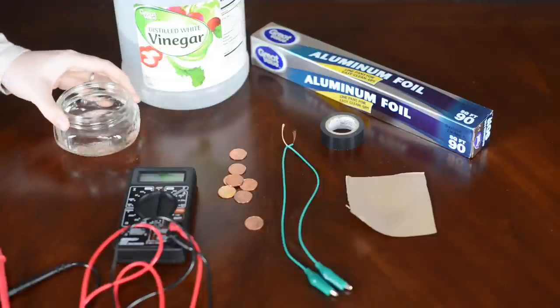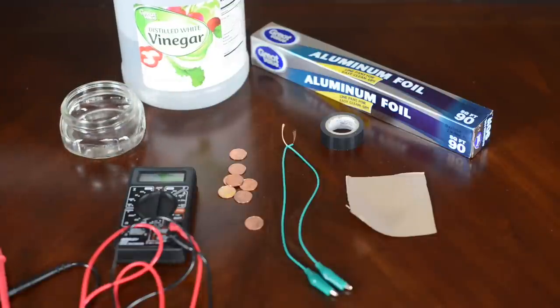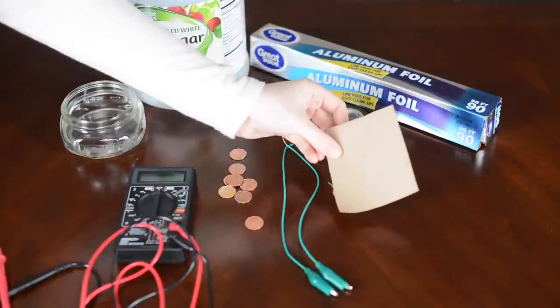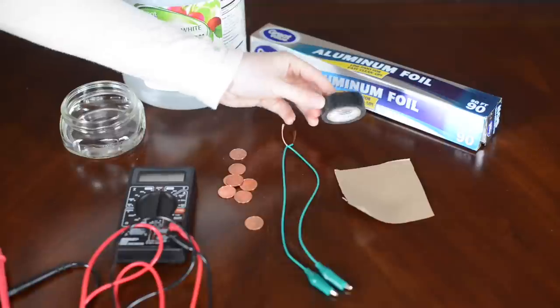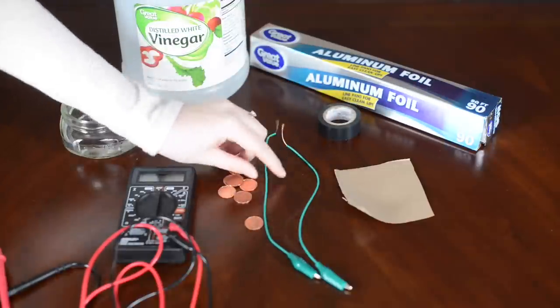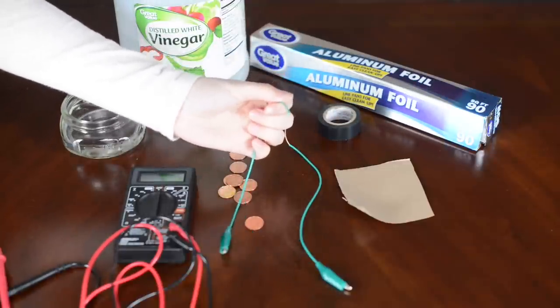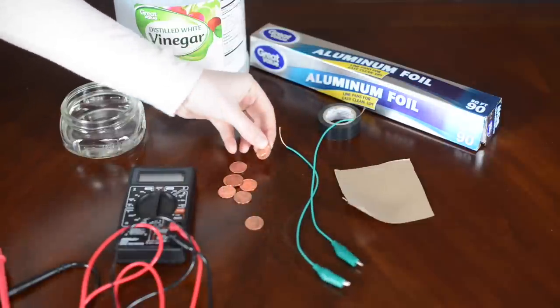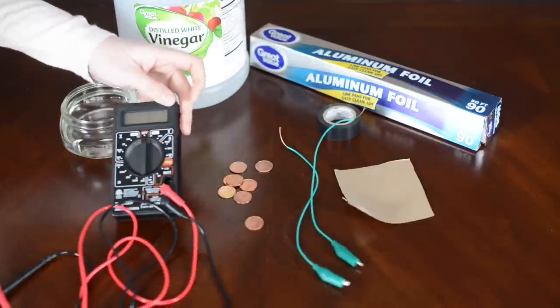All right, so what you'll need for this is some vinegar. I have a little dish here. Aluminum foil. Some thin cardboard. Some tape. It doesn't have to be electrical tape. It could be even scotch tape. Some test leads that have been cut and stripped on the end. Some pennies. And a multimeter.